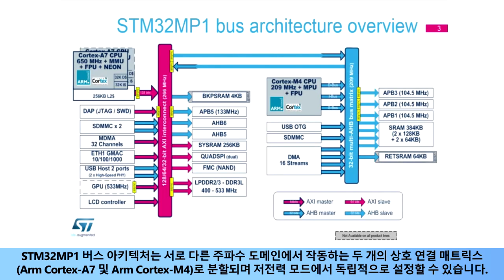The STM32 MP1 bus architecture is split into two interconnect matrices — ARM Cortex-A7 and ARM Cortex-M4 — operating in different frequency domains, which can be set in low-power modes independently.